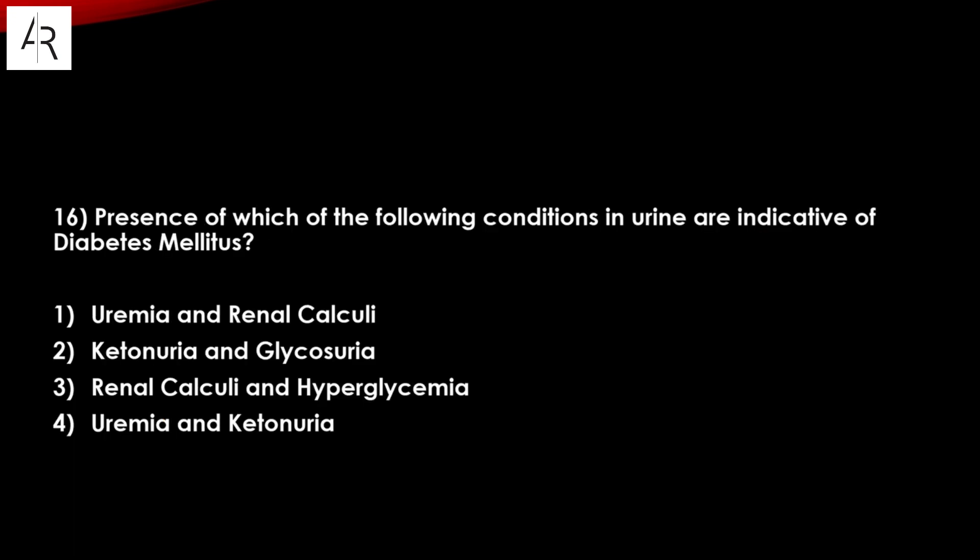Question number sixteen: presence of which condition in urine is indicative of diabetes mellitus? Uremia and renal calculi — not possible. Ketonuria and glycosuria — option number two is the answer, because ketonuria means ketone bodies in urine and glycosuria means glucose in urine.